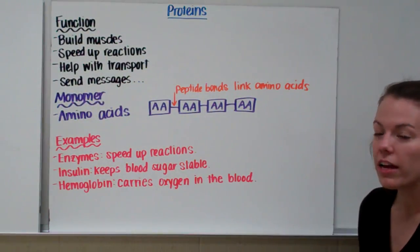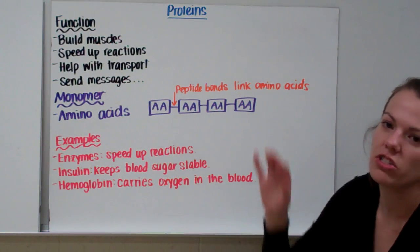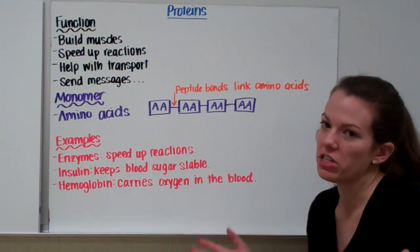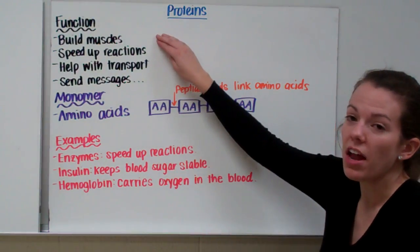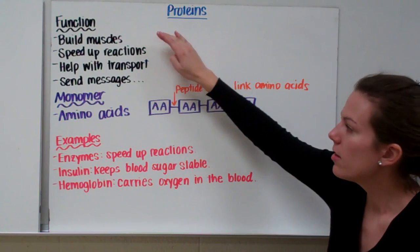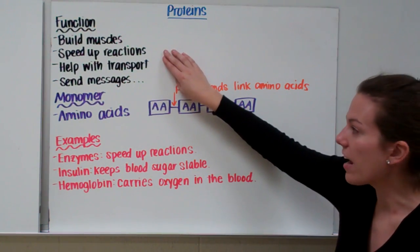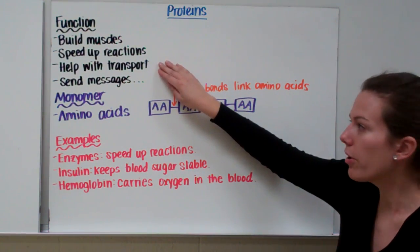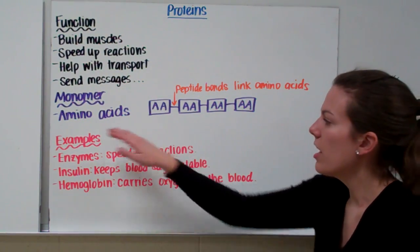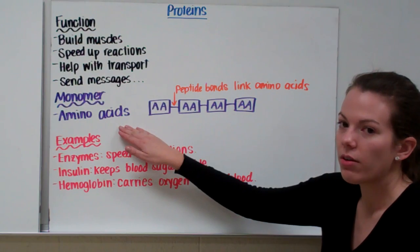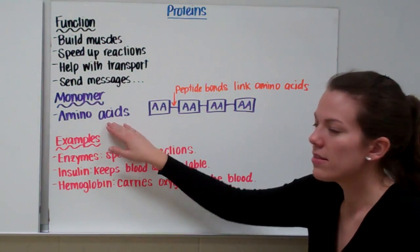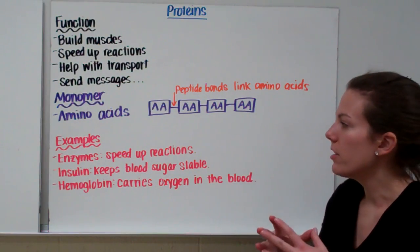Our final organic molecule is proteins. Proteins do all sorts of different things inside your body — pretty much anything your body needs them to do. They are used to build muscles, speed up reactions, help with cell transport, and send messages. Their building block is called an amino acid. Don't confuse that with nucleic acid. We put amino acids together to make proteins.